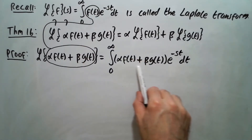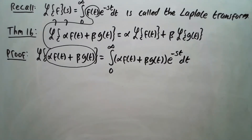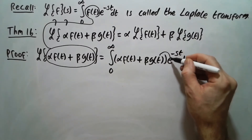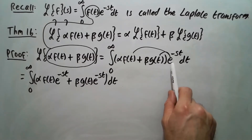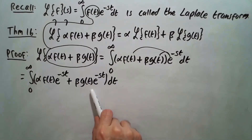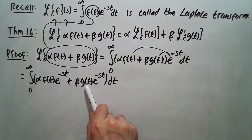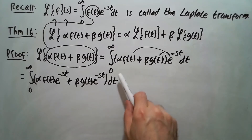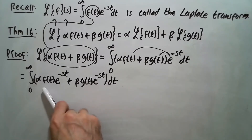So it'll be alpha f plus beta g times e to the minus st. We can then distribute the e into that expression. Doing that, we get alpha f times e to the minus st plus beta g times e to the minus st. Now recall that the integral of the sum of two functions equals the integral of the first plus the integral of the second, so we can break this into two integrals.